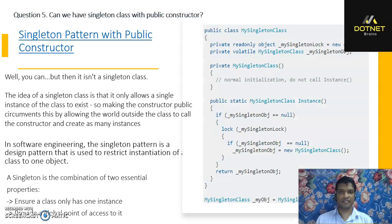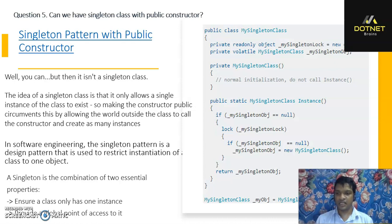Question five: can we have a singleton class with a public constructor? We can, but then it is not truly a singleton class. The idea of a singleton is that only a single instance of the class is allowed to exist. Making the constructor public allows the outside world to call the constructor and create as many instances as they want. A singleton is the combination of two essential properties: ensuring a class only has one instance, and providing a global point of access to it. You can use a lock keyword to prevent the creation of multiple instances.